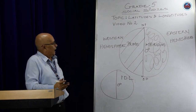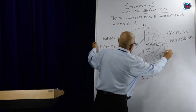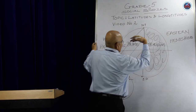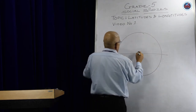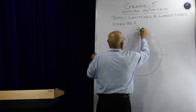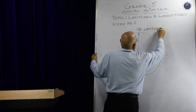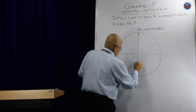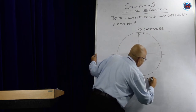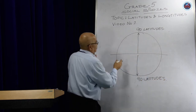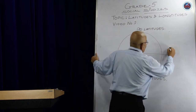Just like the equator divides the earth into the northern hemisphere and the southern hemisphere, we also have the western hemisphere and the eastern hemisphere. For latitudes, from the equator to the north pole we have 90 latitudes, and from the equator to the south pole we have another 90, making a total of 90 plus 90 equals 180, plus 1 means 181 latitudes.